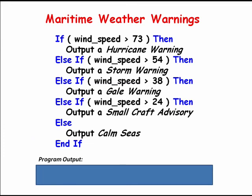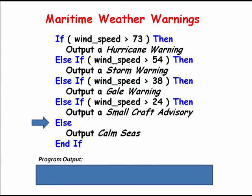The worst case scenario for a cascading if is that none of the conditions are true. Let's assume we have a wind speed of 12 miles per hour. Our algorithm dictates that we would first check to see if we have a hurricane warning. Since we don't, we would continue cascading down through the conditions until we reach the else clause. Since none of the other conditions are true, the code contained within the else clause will be executed. In this case, a message will be sent to the screen that says CALM SEAS.